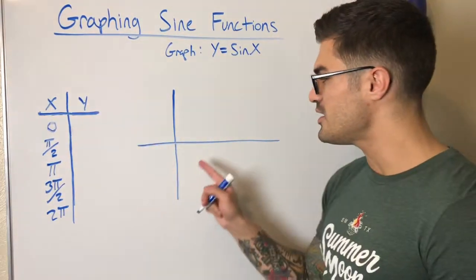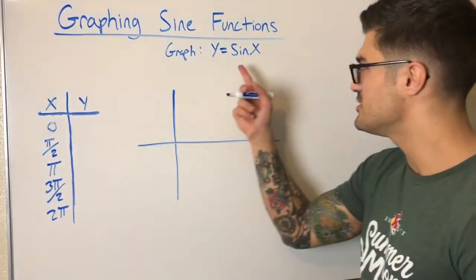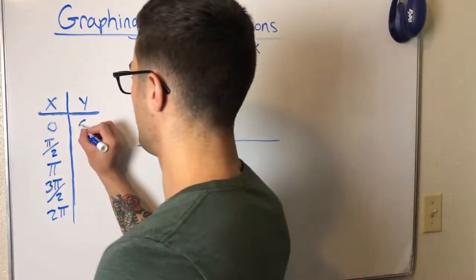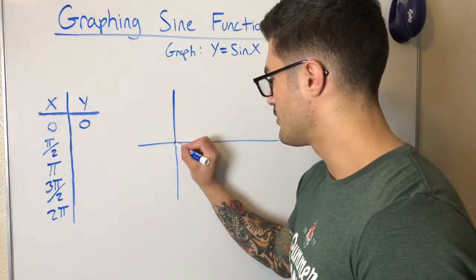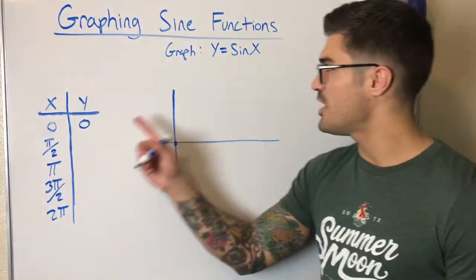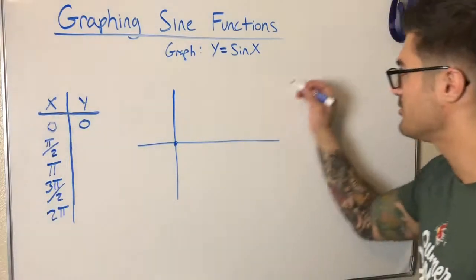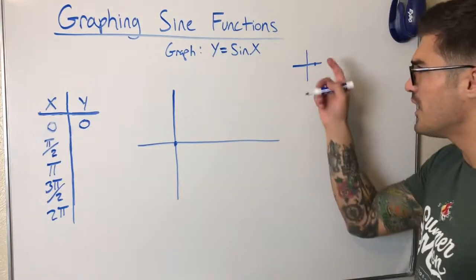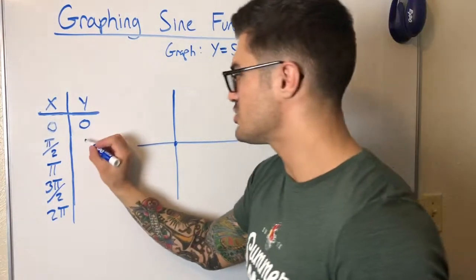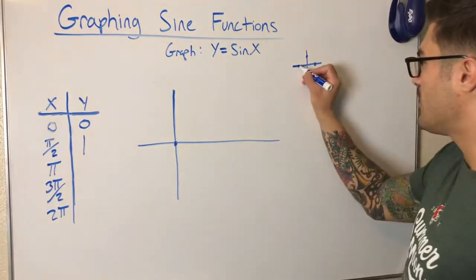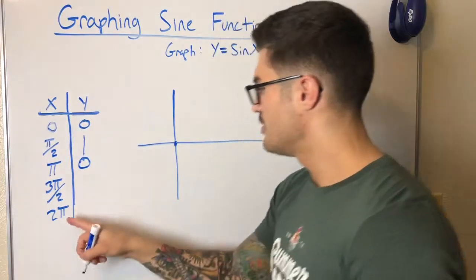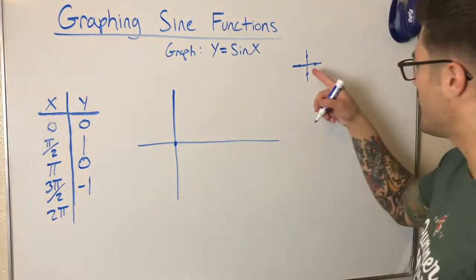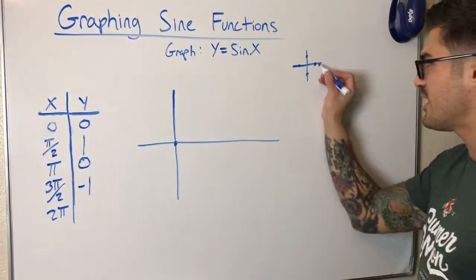Now I plug these in to get y-values. Sine of zero is zero, so we start at (0, 0). Sine of pi over two is one, so y equals one. Sine of pi is zero again — back to zero. Sine of three pi over two is negative one — down to negative one. And two pi gives the same sine value as zero, so we're back to zero.